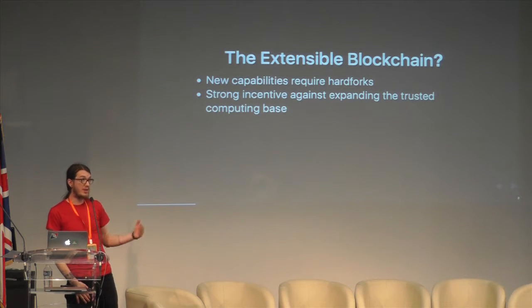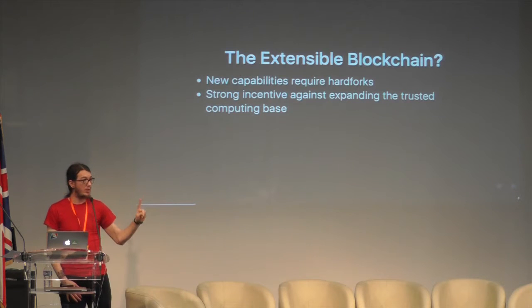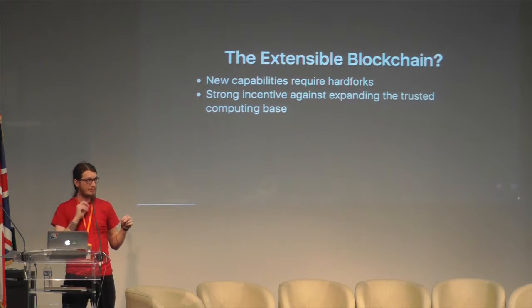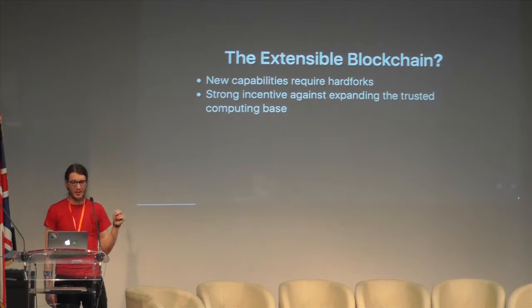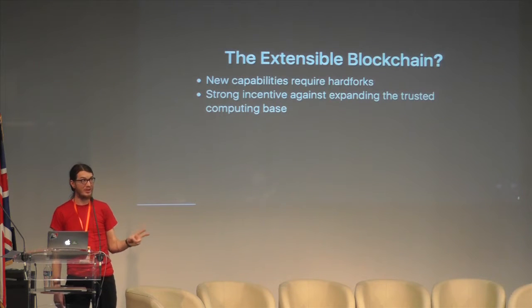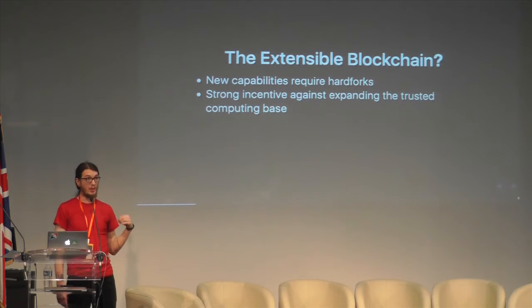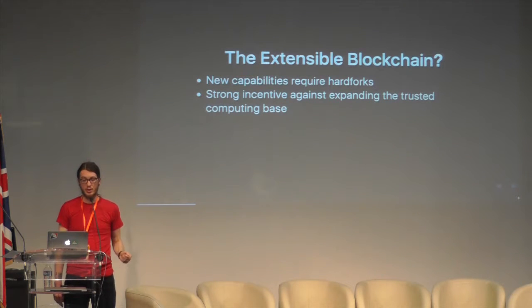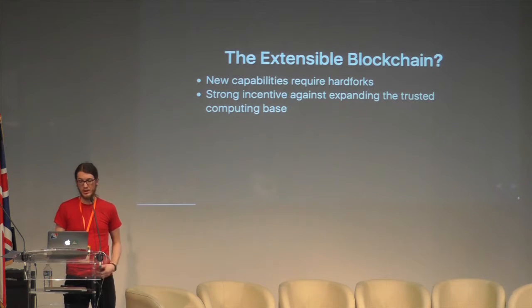In browsers we have one attack vector: malicious code that's trying to break out of the sandbox. But in blockchains, we have two possibilities — malicious code trying to break out of the sandbox, and trying to break consensus. Code can just get one of the clients to operate non-deterministically and produce a different result. Then it breaks consensus and all those clients fall off the network. So I think there's an even stronger incentive in blockchain world to be careful with how big our trusted computing base is.